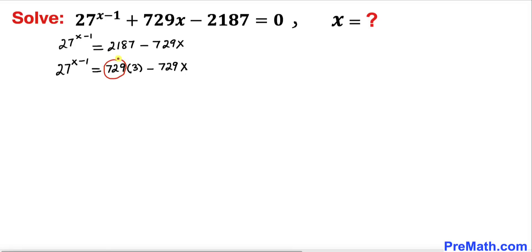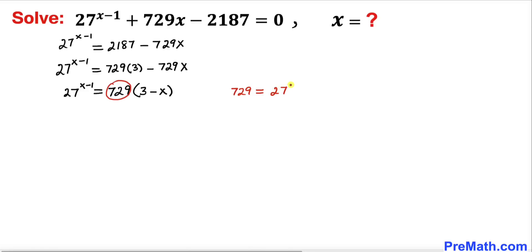On the right hand side, 729 is common, so we factor out 729 to get 729 times (3 minus x). Now, 729 is the same as 27 squared, so the equation becomes: 27 to the power x minus 1 equals 27 squared times (3 minus x).